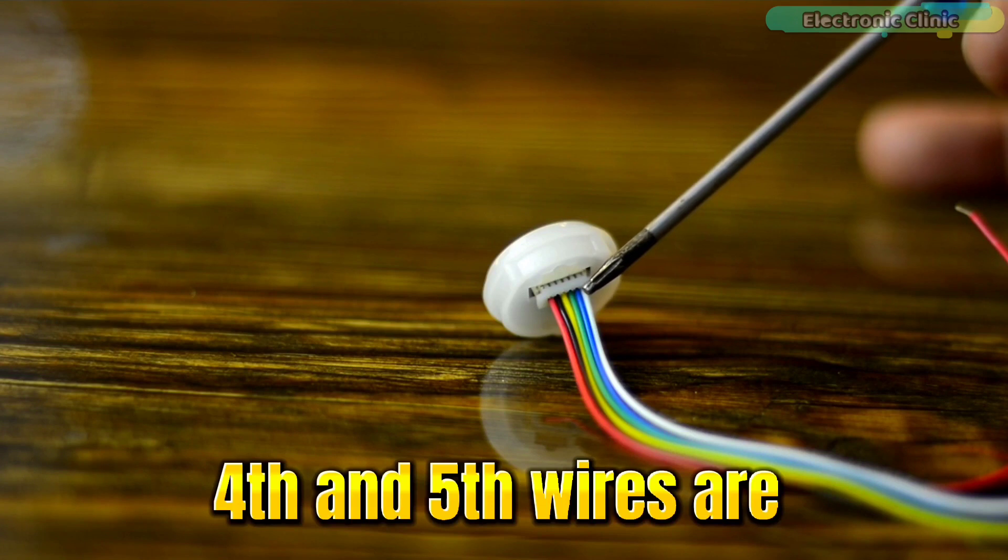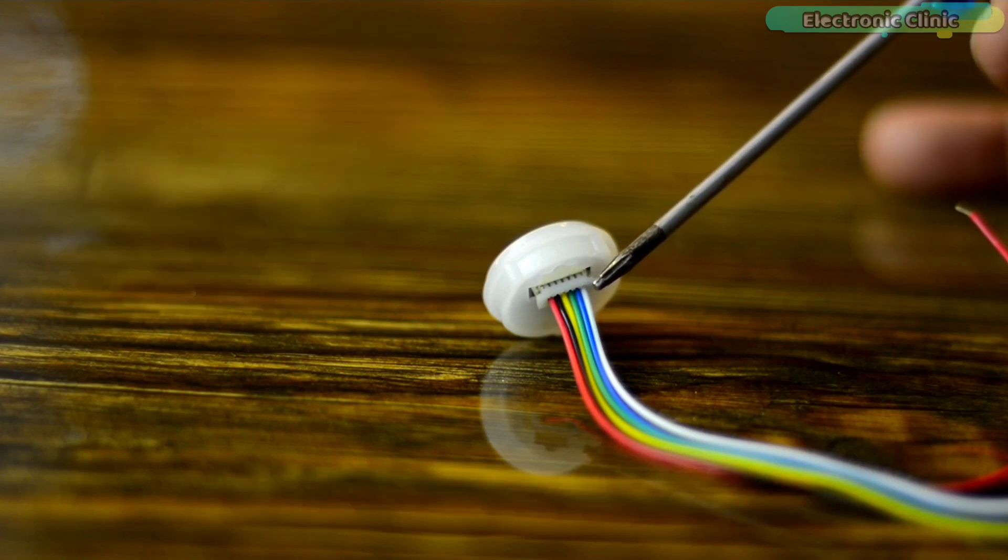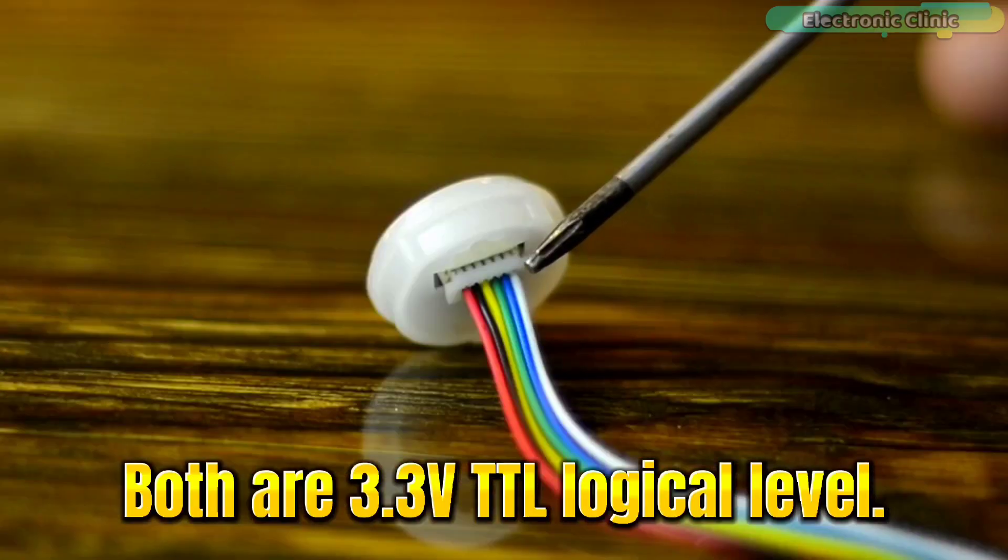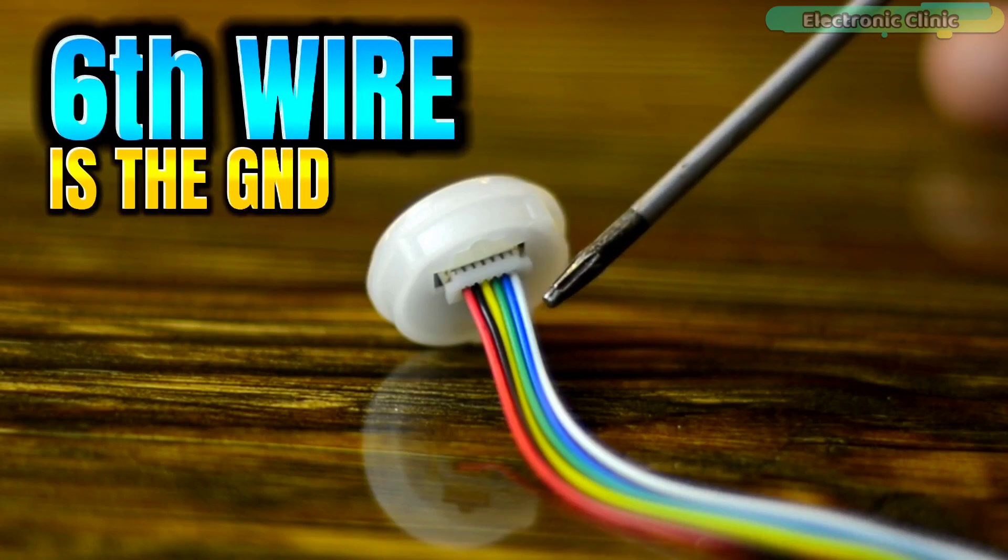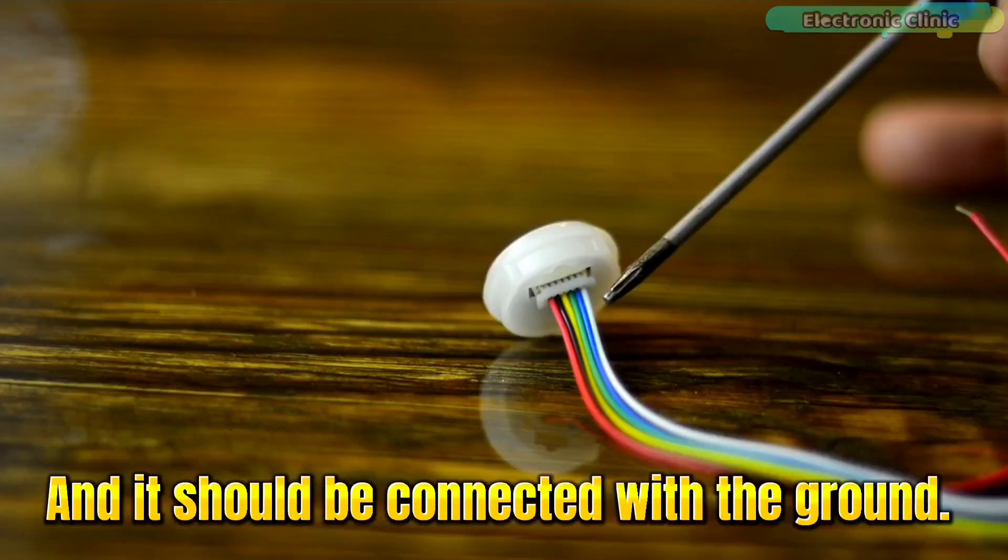Fourth and fifth wires are TXT and RXD. Both are 3.3 volt TTL logic level. And sixth wire is the ground and it should be connected with the ground.